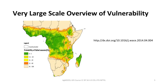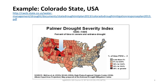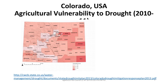We saw in another talk that very large-scale global overviews are available — like in the case of Africa, where drought vulnerability has been computed and forecast. We also looked at how drought vulnerability is made available for a continental nation like the United States, and how it can be scaled down to the level of a state, and even to a collection of counties inside that state — in this case Colorado, which is considered to be a highly vulnerable state.